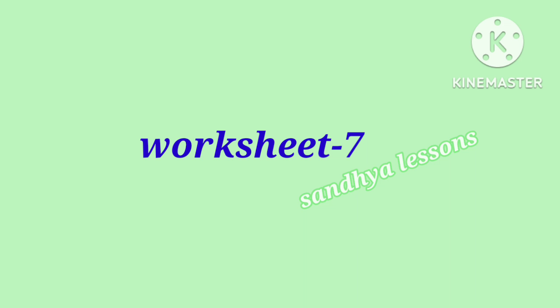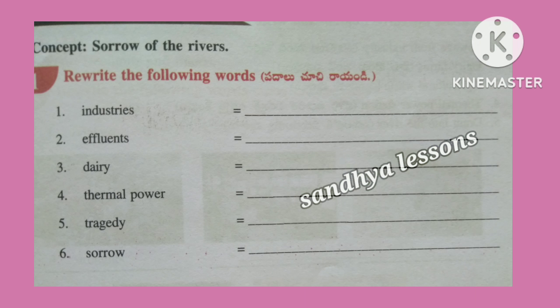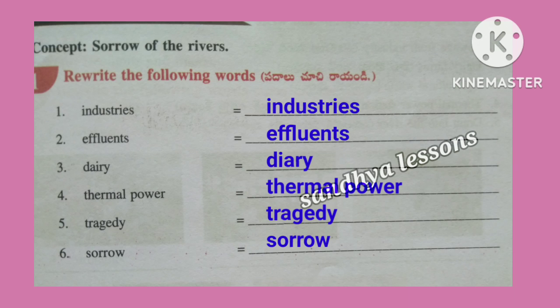Worksheet 7. First, rewrite the following words: Industries, Effluence, Diary, Thermal Power, Tragedy, Sorrow.